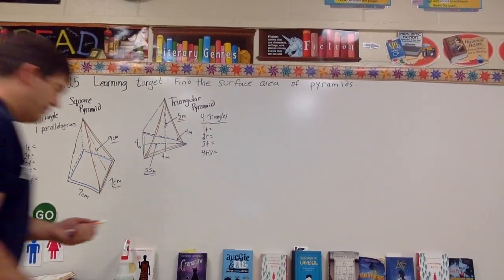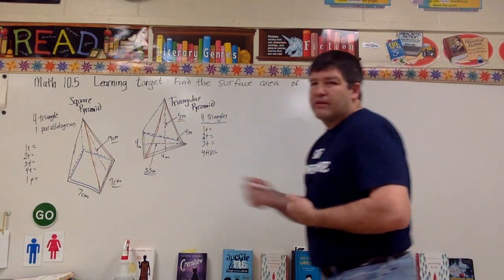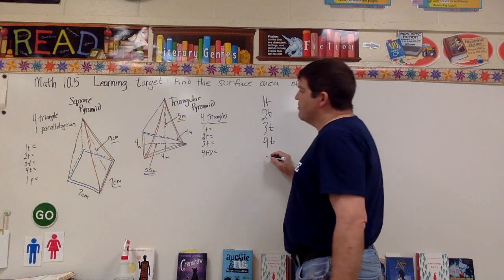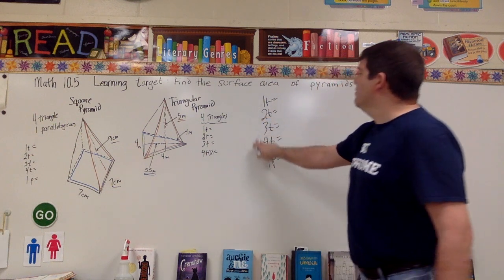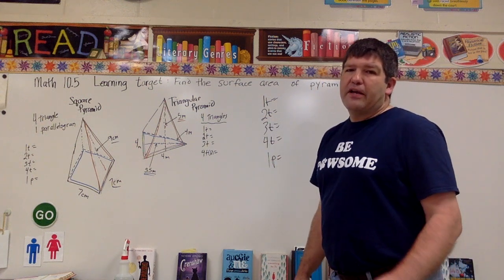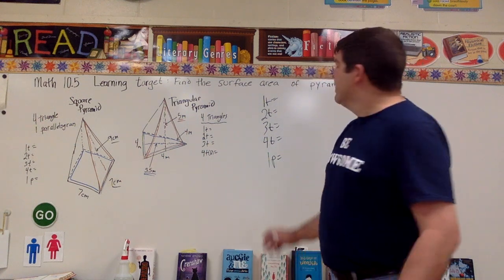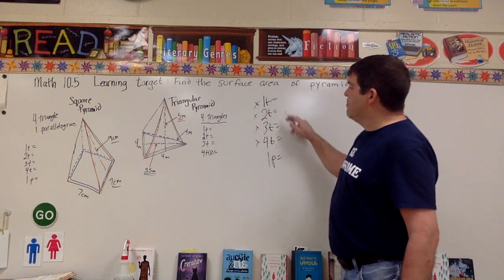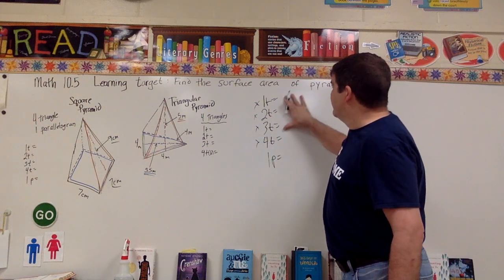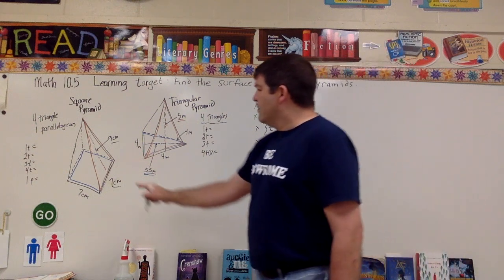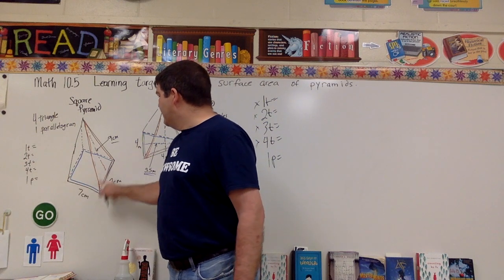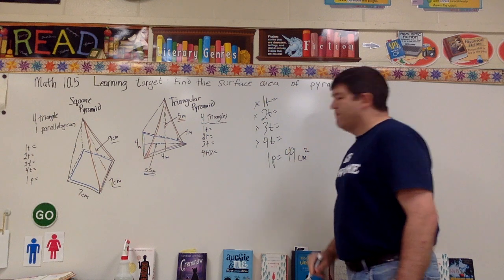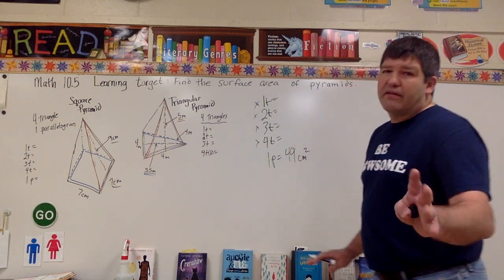Let's do the square pyramid first. I know with a square pyramid I'm going to have four triangles and one parallelogram. The cool thing is once I get one triangle, they're all going to be the same — I'll multiply by four. Let's get the base first: it's a square, seven by seven. Seven times seven is forty-nine centimeters squared.